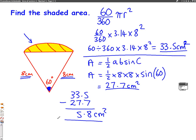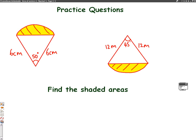So this yellow area at the top is 5.8 centimeters squared. And the question is done. I've got a couple of questions here for you to have a practice and see how you get on. Good luck.